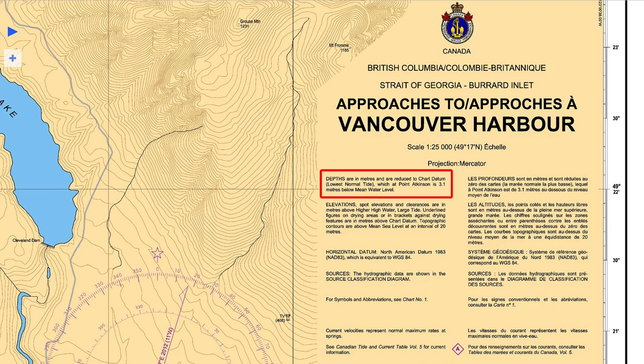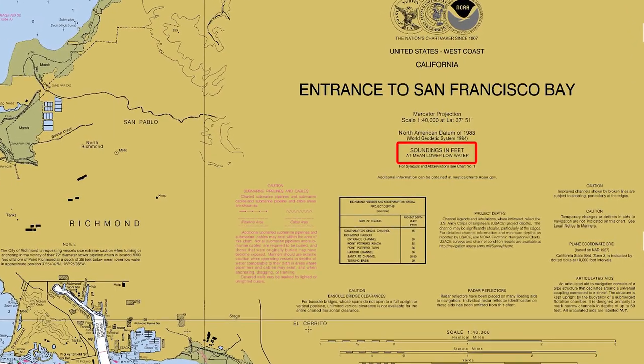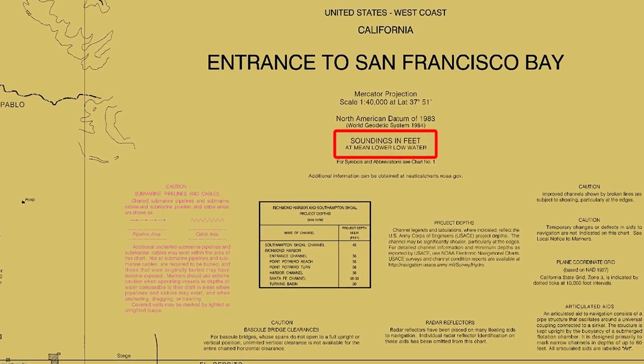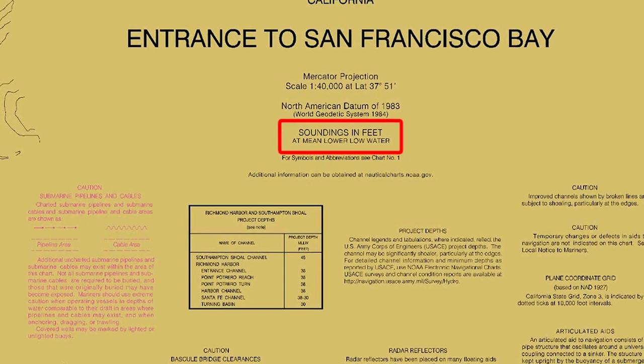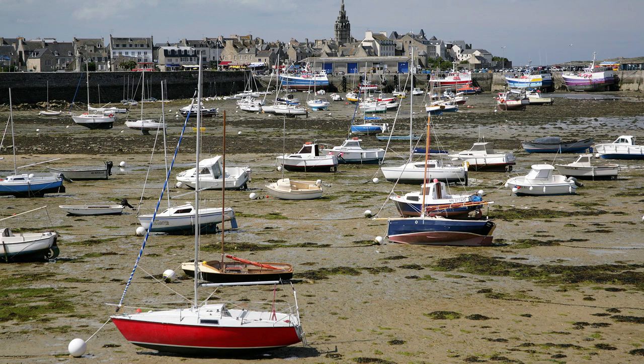Depths are measured from chart datum, which on Canadian charts is lowest low water large tide — LLWLT — or lowest normal tide. Most charts are metric, but US charts are in feet, and some older charts might still be in fathoms. A fathom, by the way, is equal to 6 feet. Different countries use different datums. The US uses mean lower low water, which is not as low as LLWLT. In the UK, chart datum is normally the level of lowest astronomical tide.